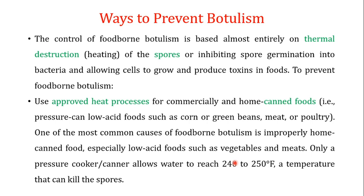Prevention of botulism is actually quite straightforward. The control of foodborne botulism is based almost entirely on the thermal destruction of the spores or toxins, or inhibiting spore germination. If you are properly heating your food, that not only kills the spores of C. botulinum but also destroys any toxin already produced, thereby preventing botulism.